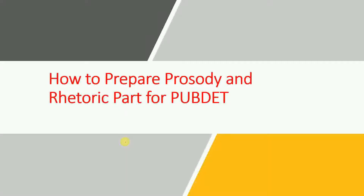Hi guys, in this video I'll discuss how to prepare the Prosody and Rhetoric part for PUBDET exam or any other college entrance test for BA English Honours. If you look at the previous question papers, a minimum of 3 or maximum 5 questions have been asked from this part, meaning questions of maximum 10 marks. Even basic level preparation will let you answer at least two or three questions.